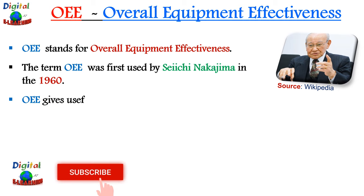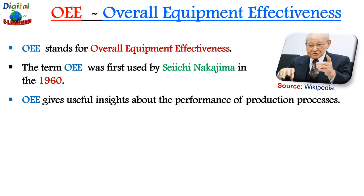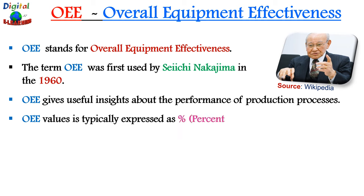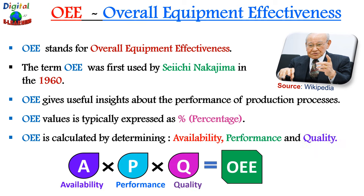OEE gives useful insight about the performance of a production process by measuring OEE and the three underlying losses in terms of availability, performance, and quality. It is typically expressed as a percentage, and is calculated by determining three important factors: availability, performance, and quality.